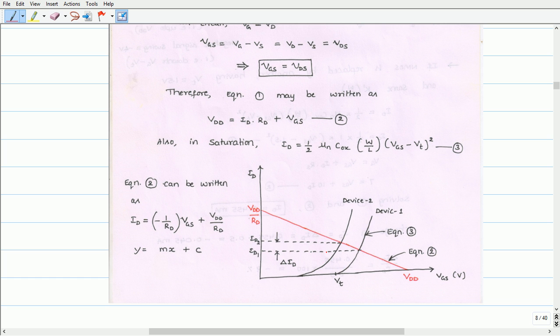Also the extremes of this straight line can be obtained from this equation by substituting ID equals 0, we get the X coordinate which is VGS equals VDD. To get the Y coordinate, substitute VGS as 0, ID will be equal to VDD by RD. Therefore, the vertical coordinate is 0, VDD by RD. The horizontal coordinate is VDD, 0. Joining these two points the straight line can be drawn.